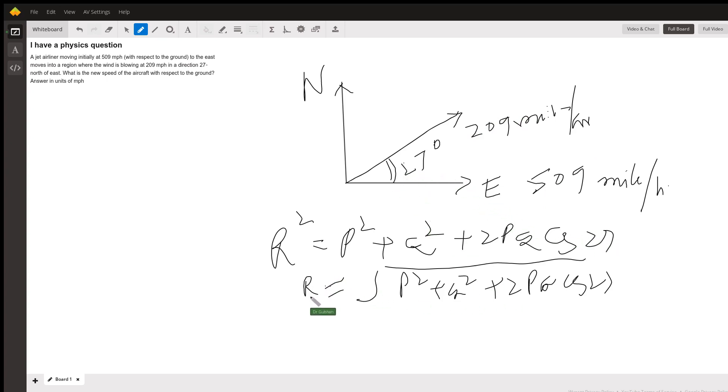Q is 209 miles per hour and the angle between P and Q is 27 degrees. So if you plug in the values, I'll get R as equal to square root of P square that is 509 square and Q as 209 square plus twice of 509 multiplied by 209, cos of 27 degrees.